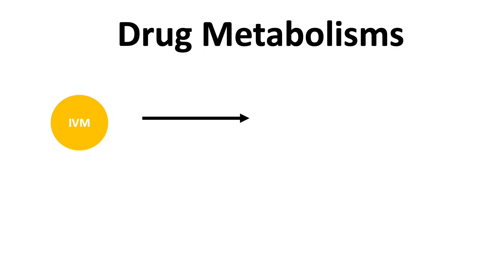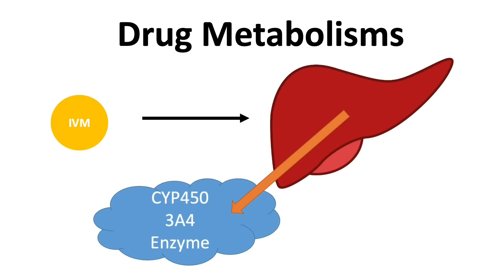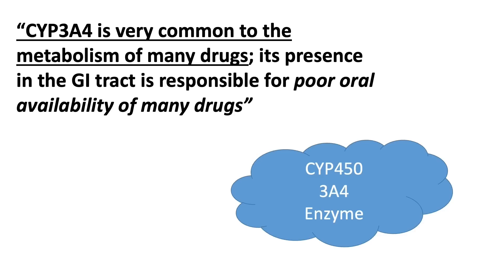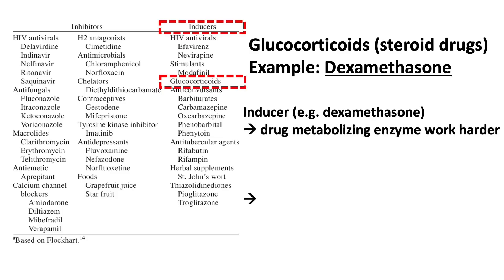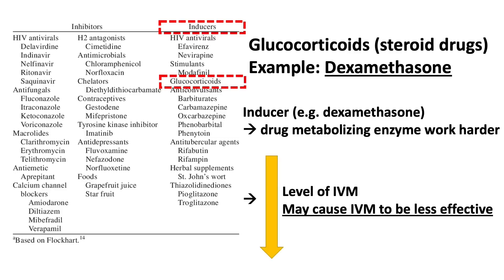Lastly, ivermectin is metabolized by the liver enzyme cytochrome P450-3A4. By and large, a lot of drugs are also metabolized by the same enzyme. In particular, steroid drugs such as dexamethasone, which are also being used to treat some cases of COVID, can induce this enzyme. Induction means making the enzyme work harder and metabolize more drug. This could lead to a decreased level of available ivermectin and may cause ineffectiveness.